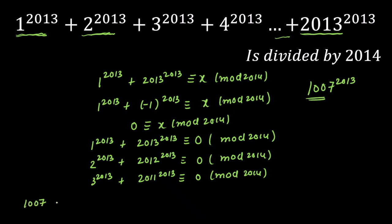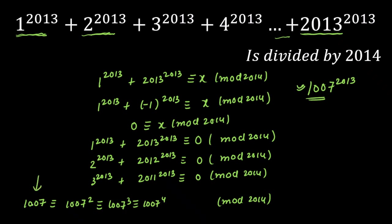Let's examine 1007 modulo 2014. Notice that 1007^2 divided by 2014 gives a remainder of 1007 — you can calculate and verify this. Similarly, 1007^3 ≡ 1007 (mod 2014), and 1007^4 ≡ 1007 (mod 2014). This pattern continues, so 1007^2013 ≡ 1007 (mod 2014).